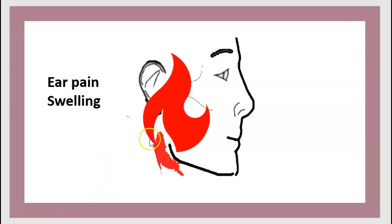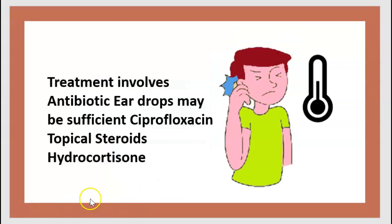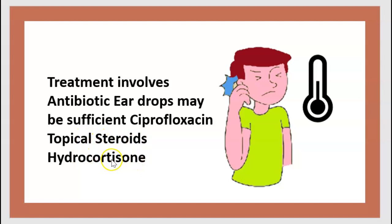Amongst the symptoms is ear pain and swelling. Otoscope exam shows swelling, redness, and pus. Treatment involves antibiotics — eardrops may be sufficient. We use ciprofloxacin, for example, and we add some topical steroid like hydrocortisone.